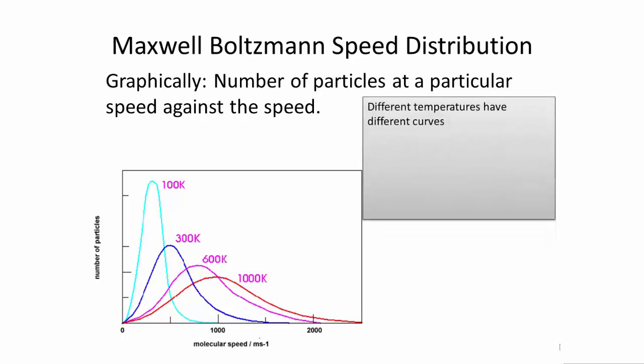First of all, different temperatures have different curves. They basically have the same area because the total area under each curve gives you the total number of particles. Also, it goes to the origin. What this tells us is that there are some particles that are going very, very slowly, or almost close to zero meters per second.